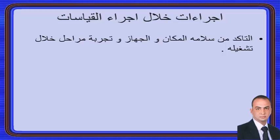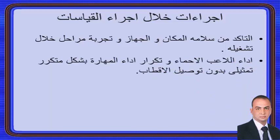اللاعب يؤدي الإحماء ويكرر المهارة بشكل متكرر؛ لا يأتي من خارج الملعب ويبدأ مباشرة. لازم يجري في ملعب مجاور ويعمل إحماءً ديناميكياً وستاتيكياً، ويكون الجو مريحاً بلا أي شد عصبي. يبدأ بأداء المهارة بشكل تمثيلي بدون الأداة أولاً. مثلاً، في رياضة التنس يتدرب على حركة الفورهاند كأنه يمسك المضرب، ثم يمسك المضرب فعلاً ويؤدي بشكل تمثيلي بسيط حتى لا تحدث تشنجات.